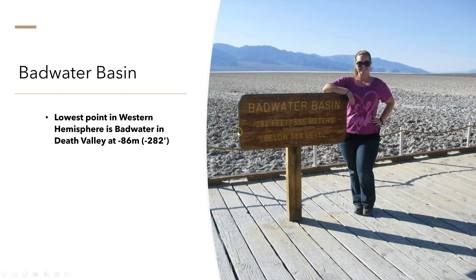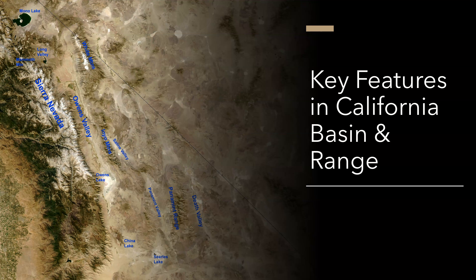Badwater Basin is at negative 282 feet elevation. Some key features in the California Basin and Range include Death Valley, the Panamint Range, Panamint Valley, Saline Valley, Inyo Mountains, Owens Valley, Long Valley, Mono Lake, Mammoth Mountain, White Mountains, China Lake, Searles Lake, and Owens Lake.